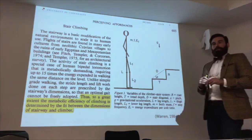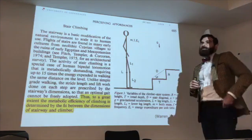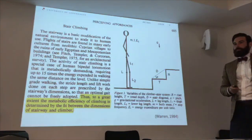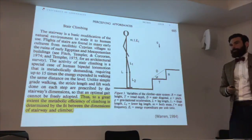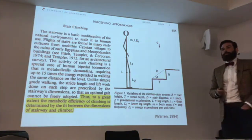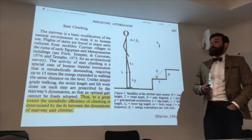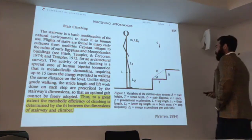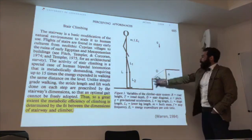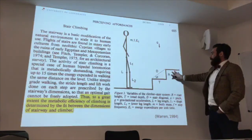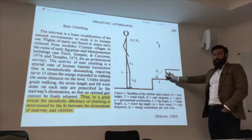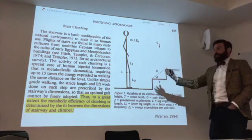An audience member raises a crucial difference: features are available, but different people use them differently — a Twitter bot uses the same features as a human user, but it's an affordance for the bot in terms of how it defines itself. The speaker agrees but argues that in terms of objects of study, we should focus on features, not affordances, because affordances are a vague and hard-to-operationalize concept.